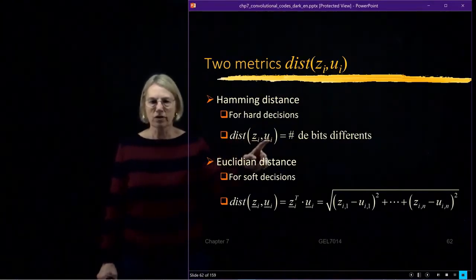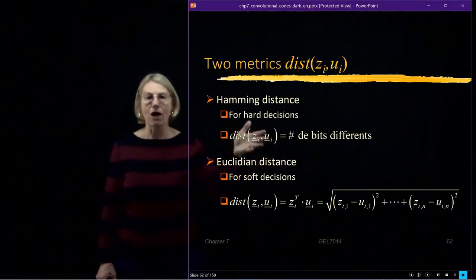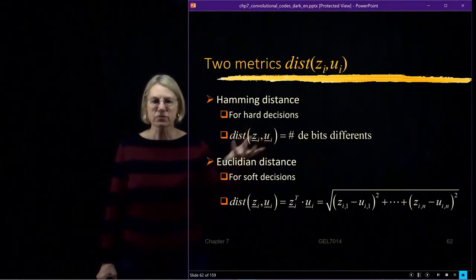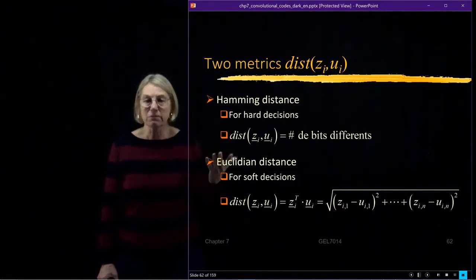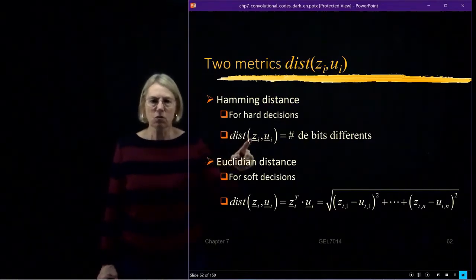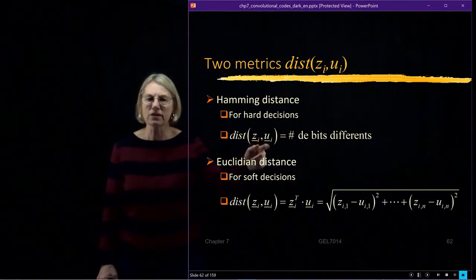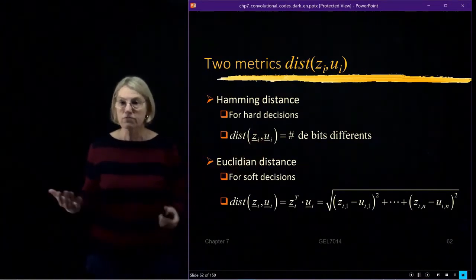Between a received word and the codeword that it might have been. So this codeword that has no errors in it. There are only a few codewords which are allowed by the code. And this is the received vector. And of course, things could have been flipped by noise. So we want to see how close is what we received to each one of the possible codewords, for instance.